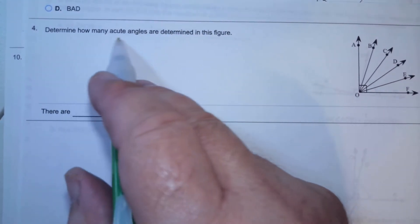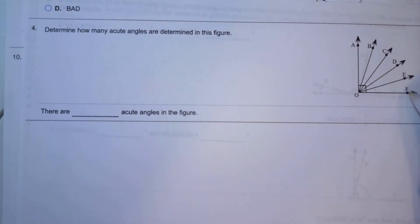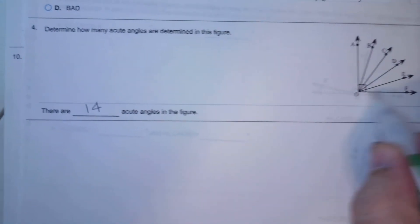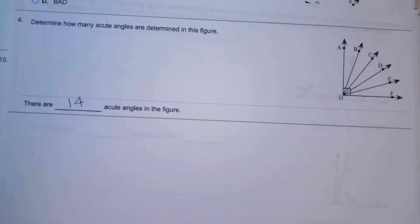Determine how many acute angles are determined in the figure below. 1, 2, 3, 4, 5, 6, 7, 8, 9, 10, 11, 12, 13, 14. Now start from this one and it goes to all possibilities, then do the next one and all the way up. There's 14 possibilities.